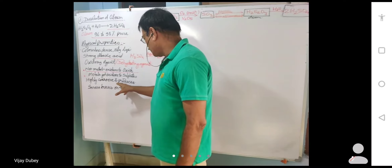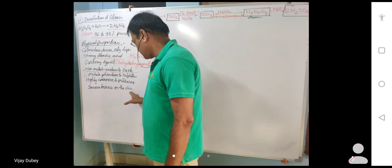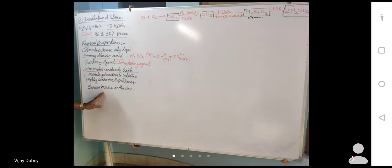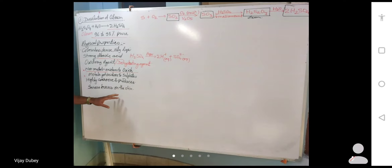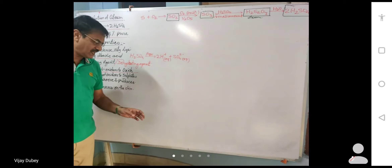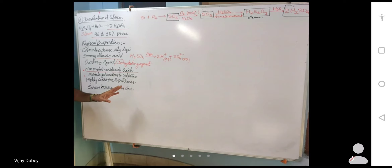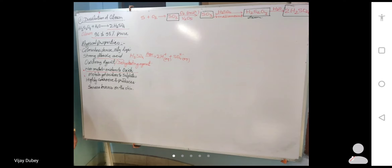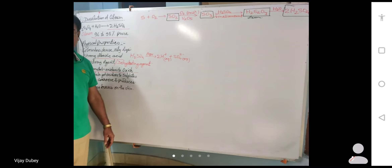Sulfuric acid is highly corrosive and produces severe burns on the skin when in contact. It is a very dangerous acid to handle. Being corrosive means it corrodes any surface it contacts — whether metal, wood, or skin — very rapidly.